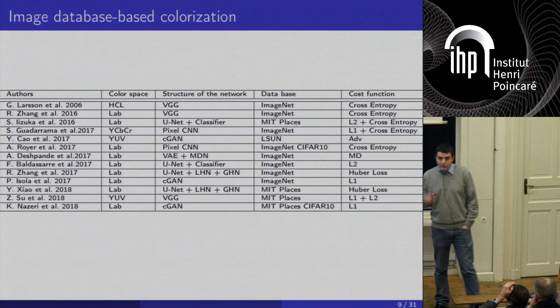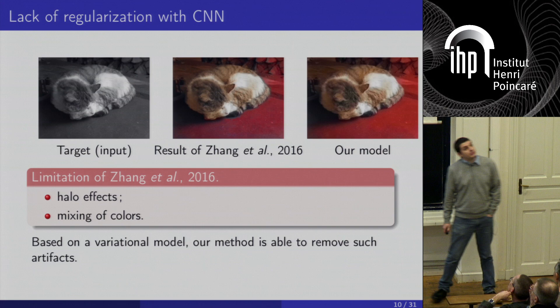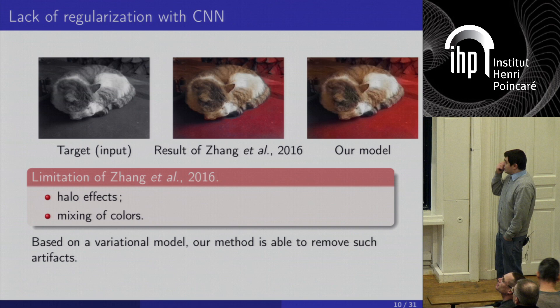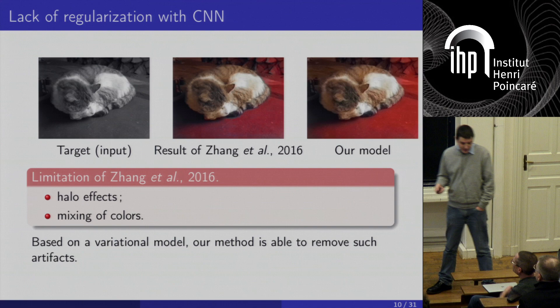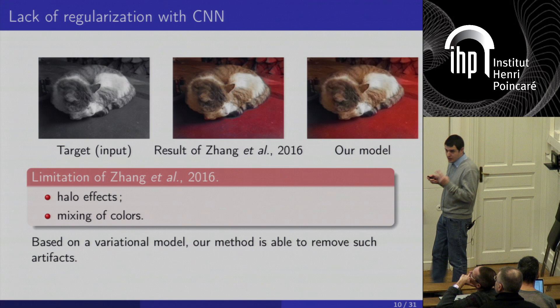What are the drawbacks? Here is the target image colorized directly with the result of Shang and collaborators. You can see a halo effect around the cat, and a melting of blue and red giving a purple color — not very beautiful. By regularizing it with a variational approach, we can remove the halo and avoid the mixing of colors. There are two points to address: the halo effect problem, and the problem of mixing colors coming from the database.